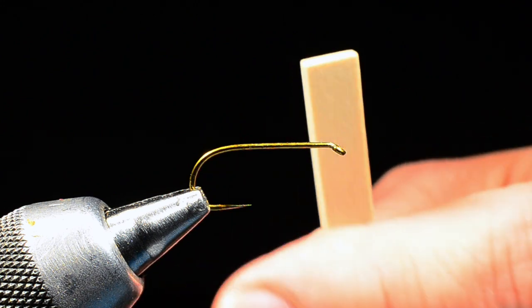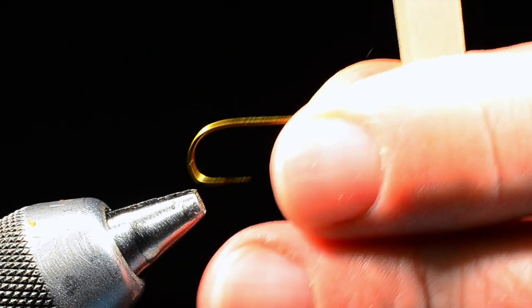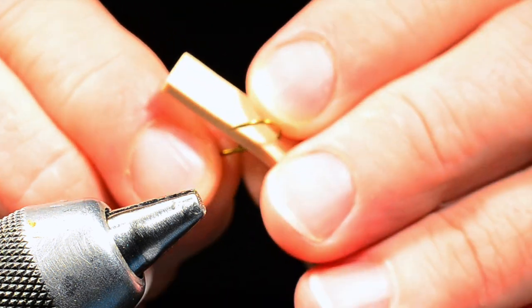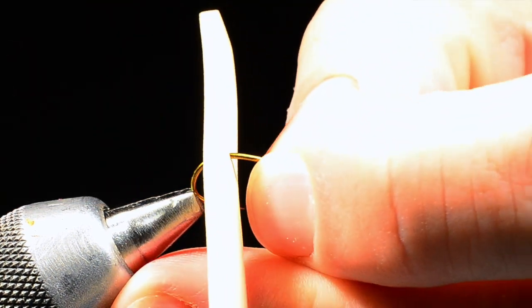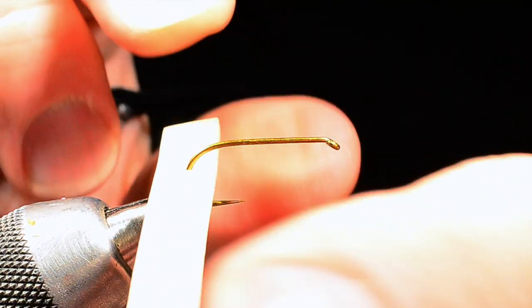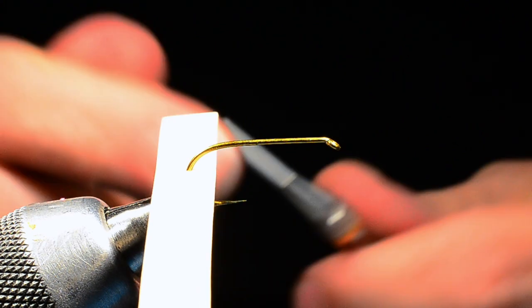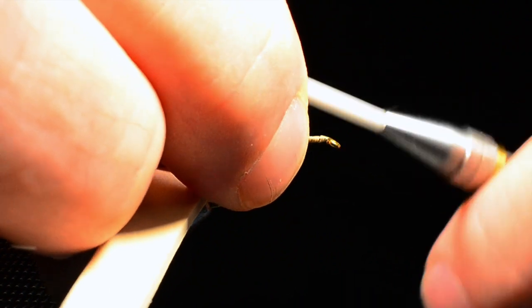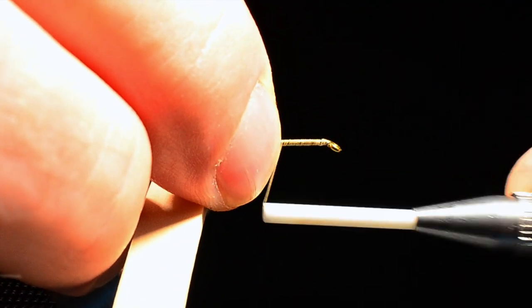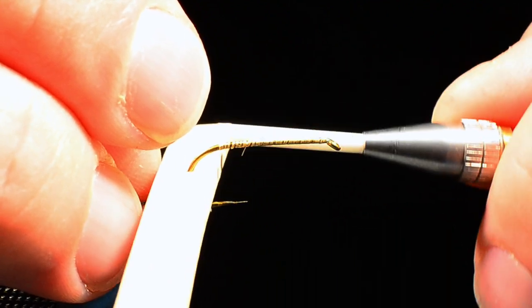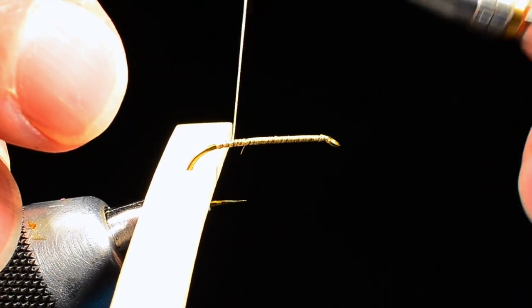So the first thing I'm going to do is I'm going to take that strip of foam and my hook, and I'm going to poke the hook through the foam a half inch or so from the end, just right in the center. And I'll slide that around the hook bend, and then I'll put my hook back in the vise. And I'll take that piece of foam and kind of slide it back out of my way for the moment.